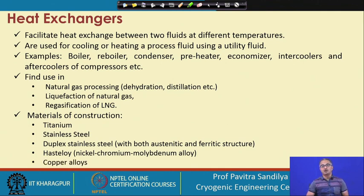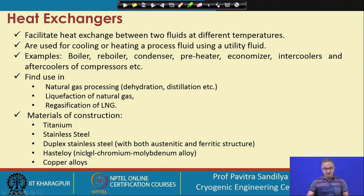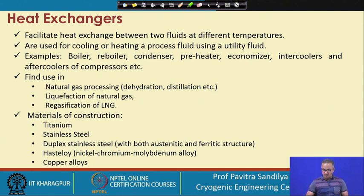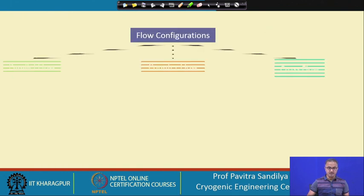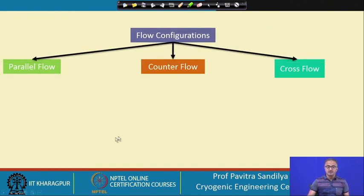These are some common materials of construction for heat exchangers. Hastelloy, duplex stainless steel, and copper alloys are among them. Depending on the temperature range we are working in, these materials of construction are chosen. There are several configurations of the flow, which have been divided into three categories: parallel flow, counter current flow, and cross flow.